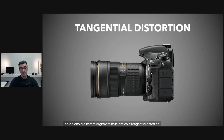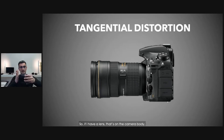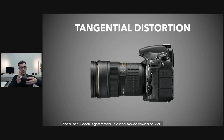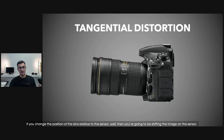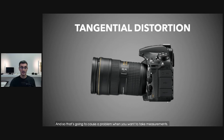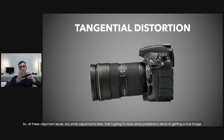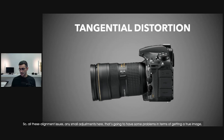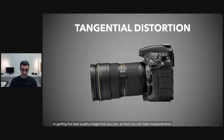There's also a different alignment issue which is tangential distortion. So if I have a lens on the camera body and I bump it or hit it, all of a sudden it kind of moves up or down a bit. If you change the position of the lens relative to the sensor, you're going to be shifting the image on the sensor, and that's going to cause a problem when you want to take measurements. So all these alignment issues — any small adjustment — are going to cause problems in terms of getting a true image and getting the best quality image so that you can take measurements.